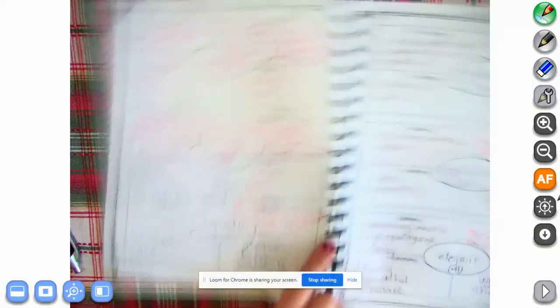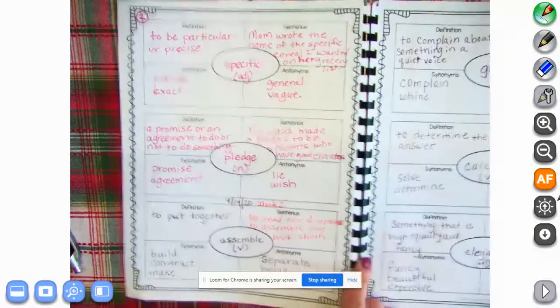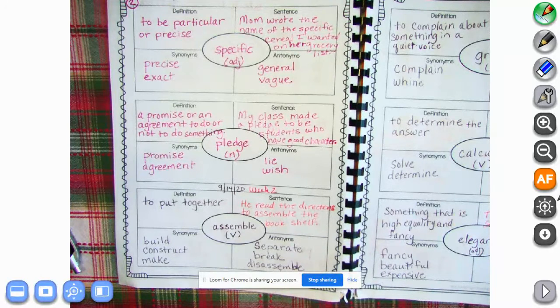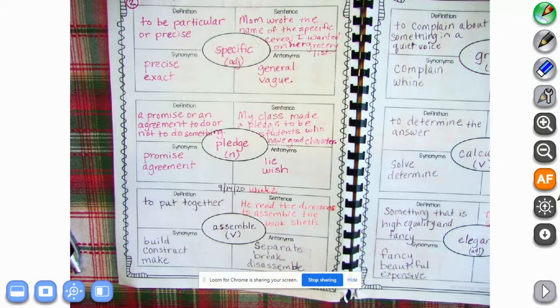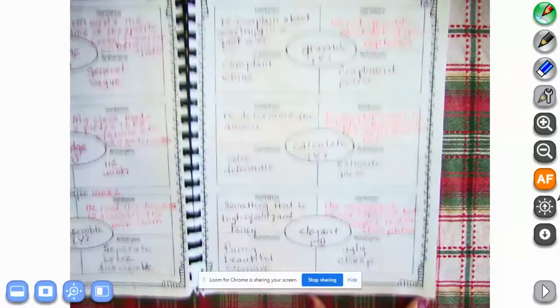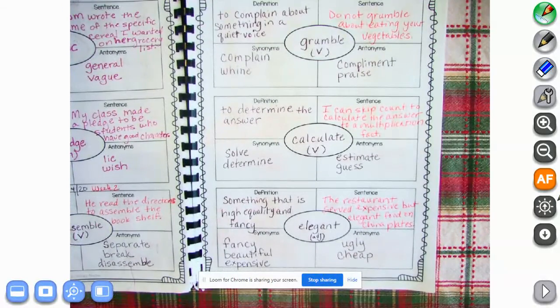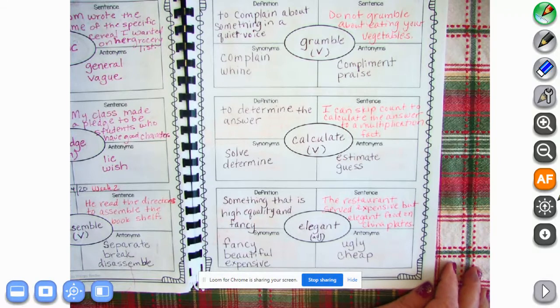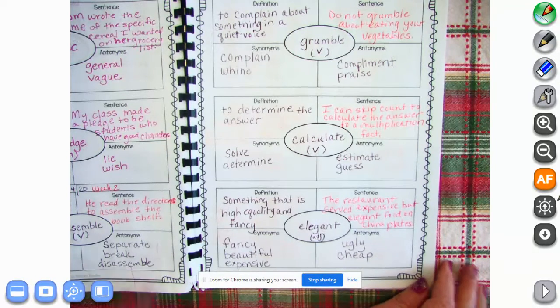Okay, the next page we had was specific, pledge, and assemble. If you're missing any of those, I would like you to get those written down as well. Go ahead and push pause. Next we have grumble, calculate, and elegant. Make sure you have everything written down there and you should be on page three on the top corner. Go ahead and push pause there.